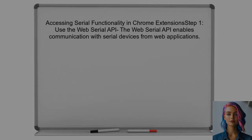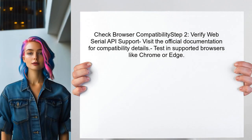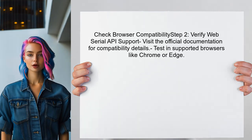To access serial functionality in a Chrome extension, you should first consider using the Web Serial API. This API allows web applications to communicate with serial devices directly from the browser. You'll need to ensure your browser supports it — check the official documentation or test in a supported browser.